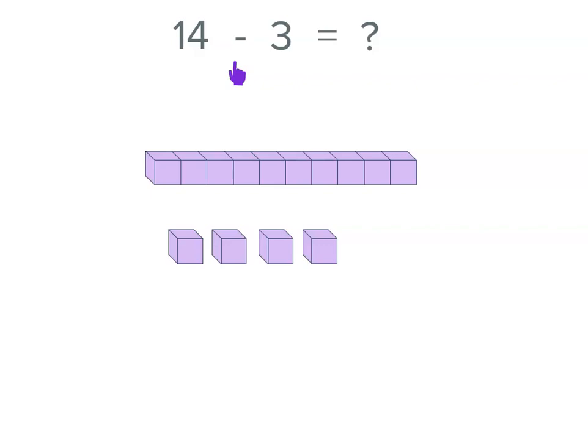Now, what we could do if we had models, we could remove them or we could cross them out on our paper. So this time I'm taking away 3. So I'm going to cross out 3. But I'm also going to remove them to see what's left. Because we started with 14, but after we take away 3, we don't have as many. So we've actually now got one of the tens and one of the units.